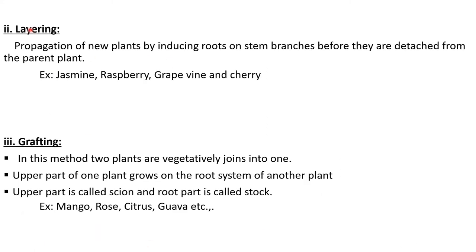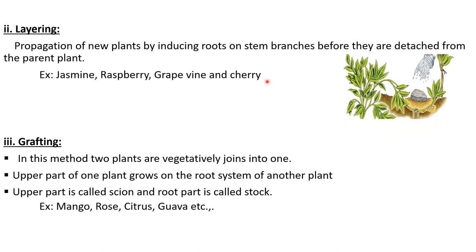The another artificial method is layering — propagation of new plants by inducing roots on stem branches before they are detached from the parent plant. We can practice this type of propagation method at our homes in the case of jasmine. The best examples are jasmine, rosemary, grapevine, and cherry. In this method, stem branches are artificially and forcibly induced to get into the soil, and later on adventitious buds are formed and it completely develops into a new plant.